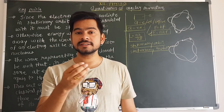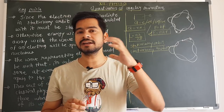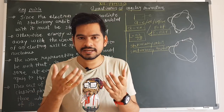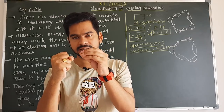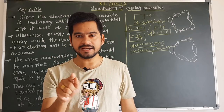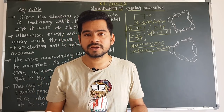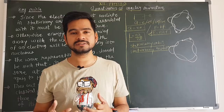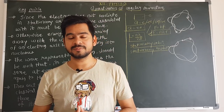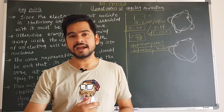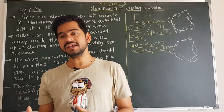If the electron were radiating energy, its energy would continuously decrease, the nucleus would attract it more and more, and the electron would spiral inward and be destroyed in the nucleus. Then atoms would not exist, the universe would not exist. But since atoms do exist, the electron must be revolving and not radiating any energy.